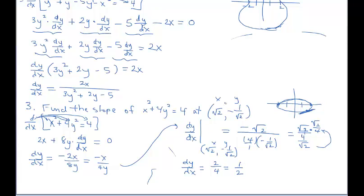If you wanted to go further and write the equation of that tangent line, it's simply point-slope form using the given ordered pair and the slope of 1/2 that we found.